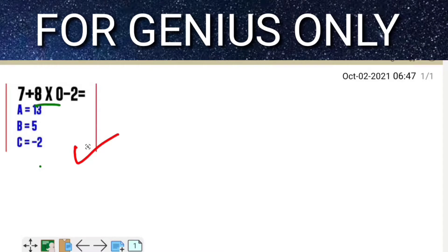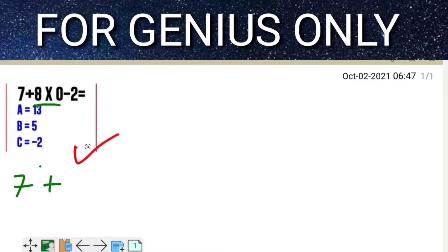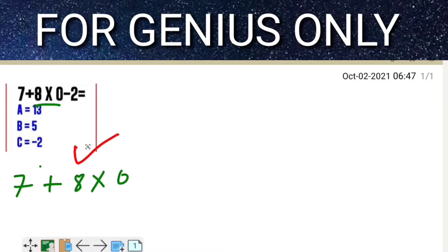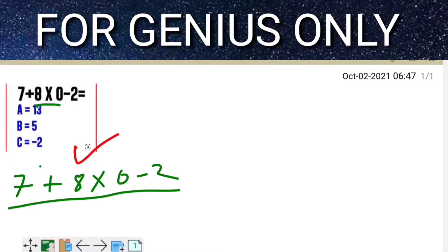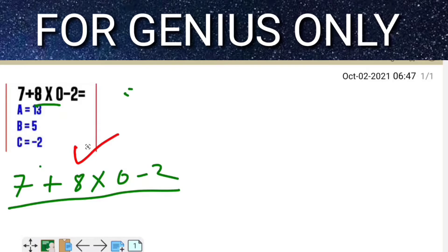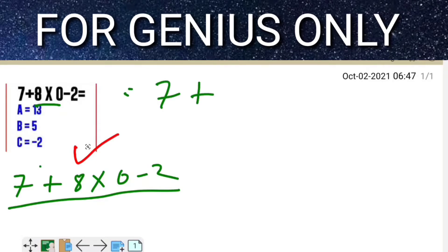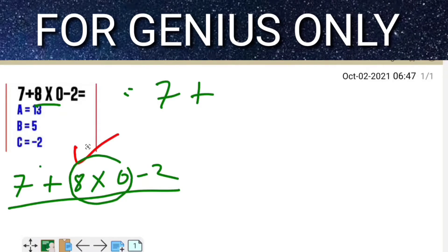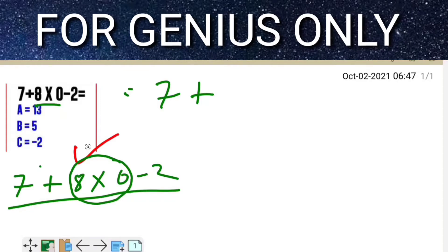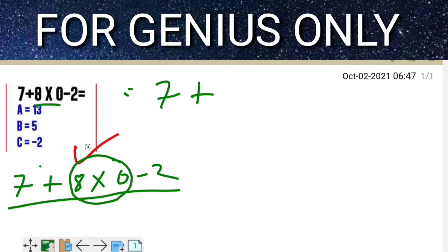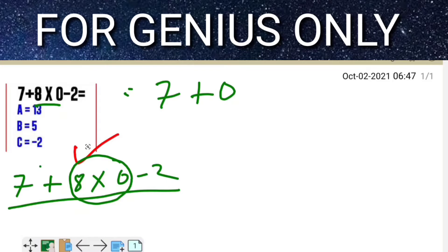See here, you can solve it: 7 plus 8 multiply 0 minus 2. How will it come? See friends, you find out here 7 plus, and if anything is multiplied with 0, that equals 0.